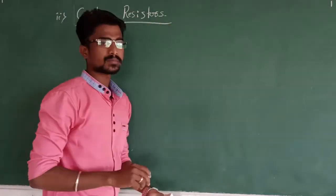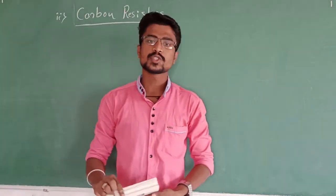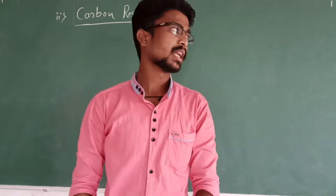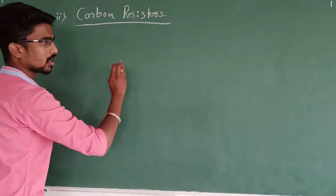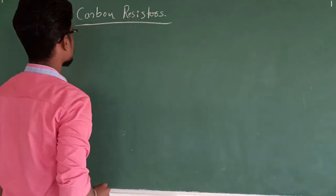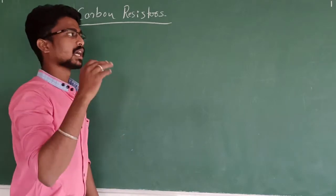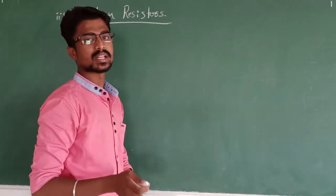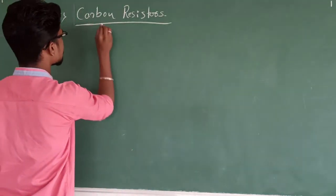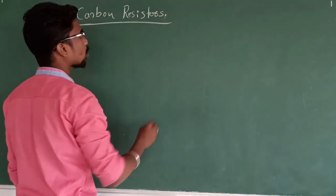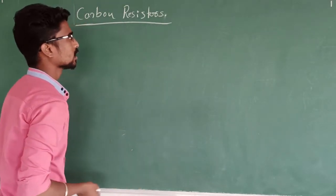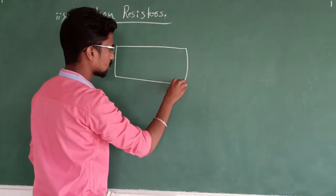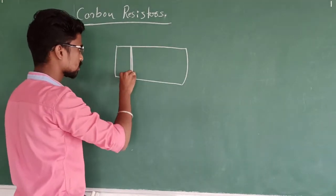Carbon resistors are made up of carbon and are very useful in electrical circuit connections. They are cylindrical in shape, very compact and small in size — a few centimeters in length and millimeters in diameter. They are easy to carry and you can get many resistors of different resistance values. Each carbon resistor consists of four bands or four lines.